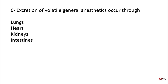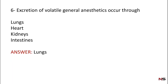Question 6: Excretion of volatile general anesthetics occurs mainly through — Lungs, Heart, Kidneys, or Liver? The correct answer is Lungs. Excretion of volatile general anesthetics mainly occurs through the lungs.